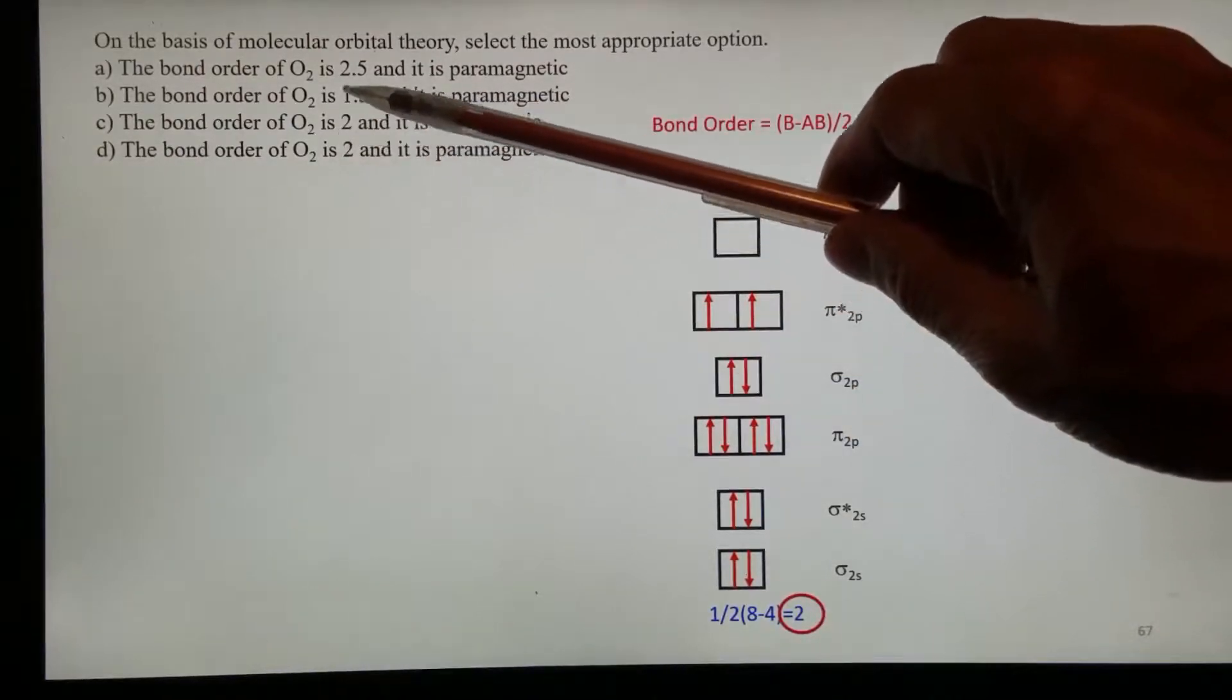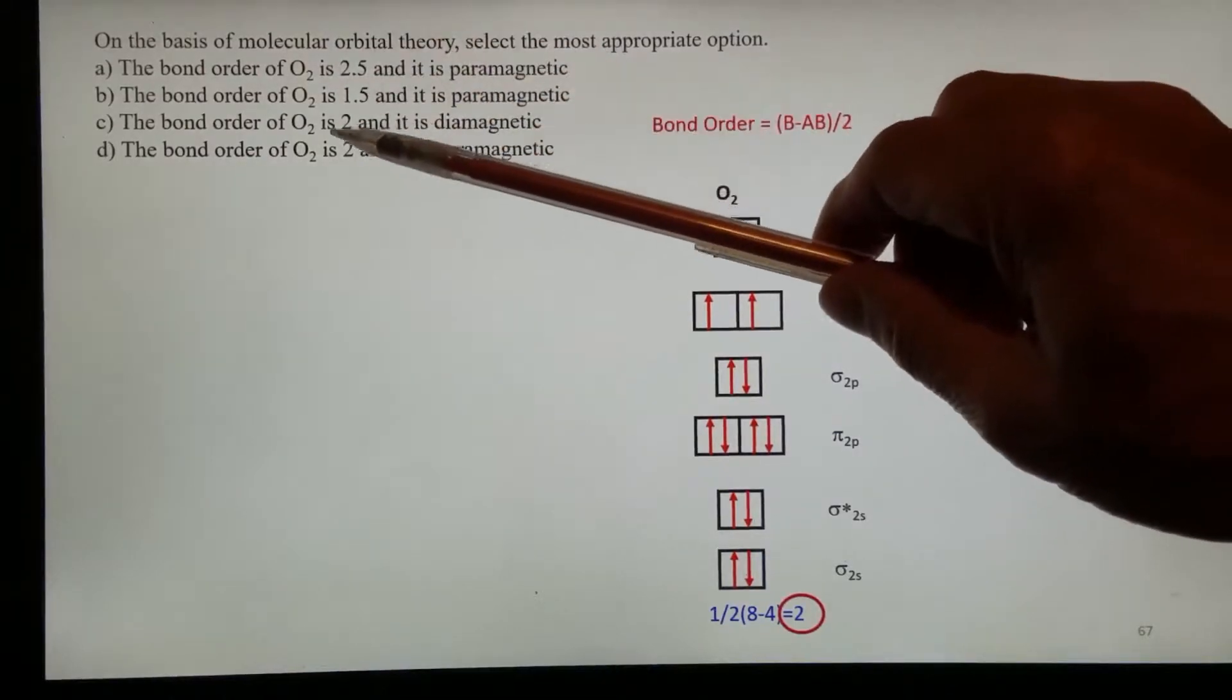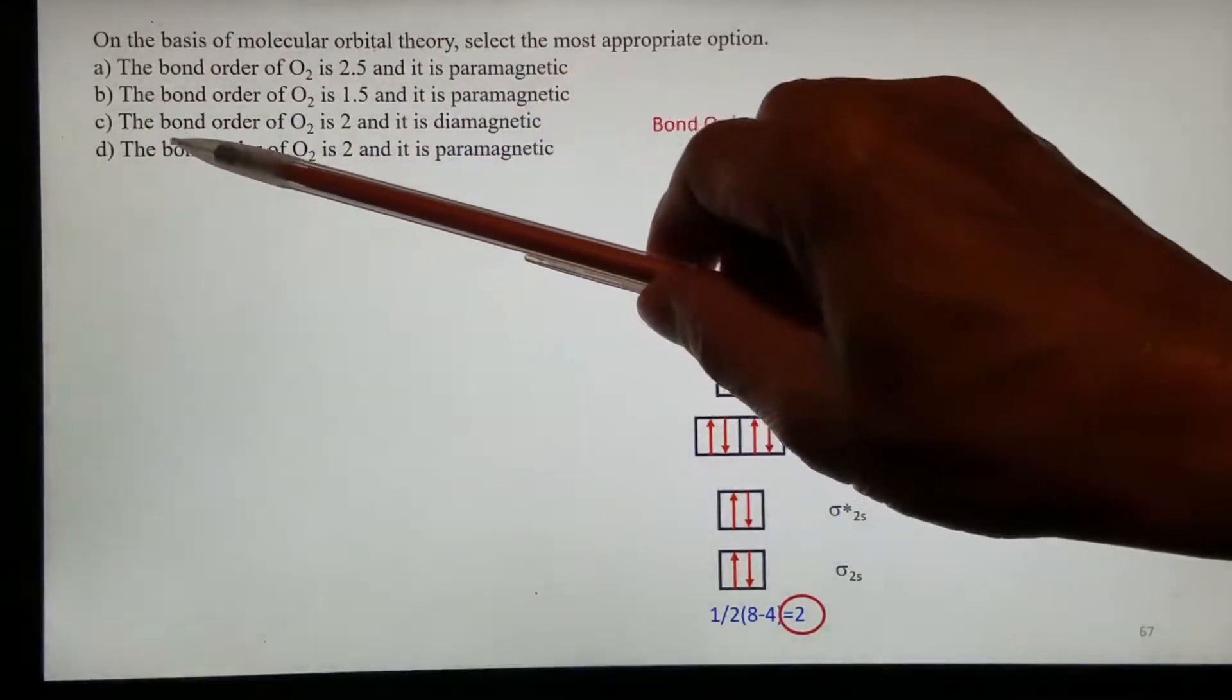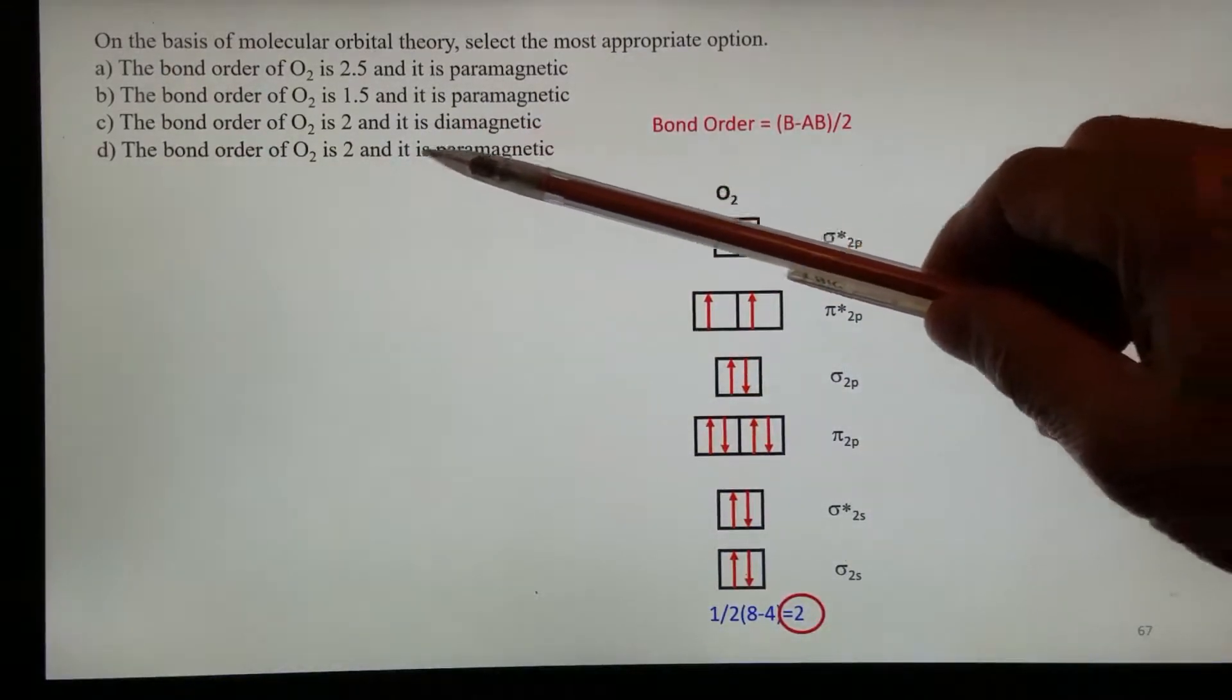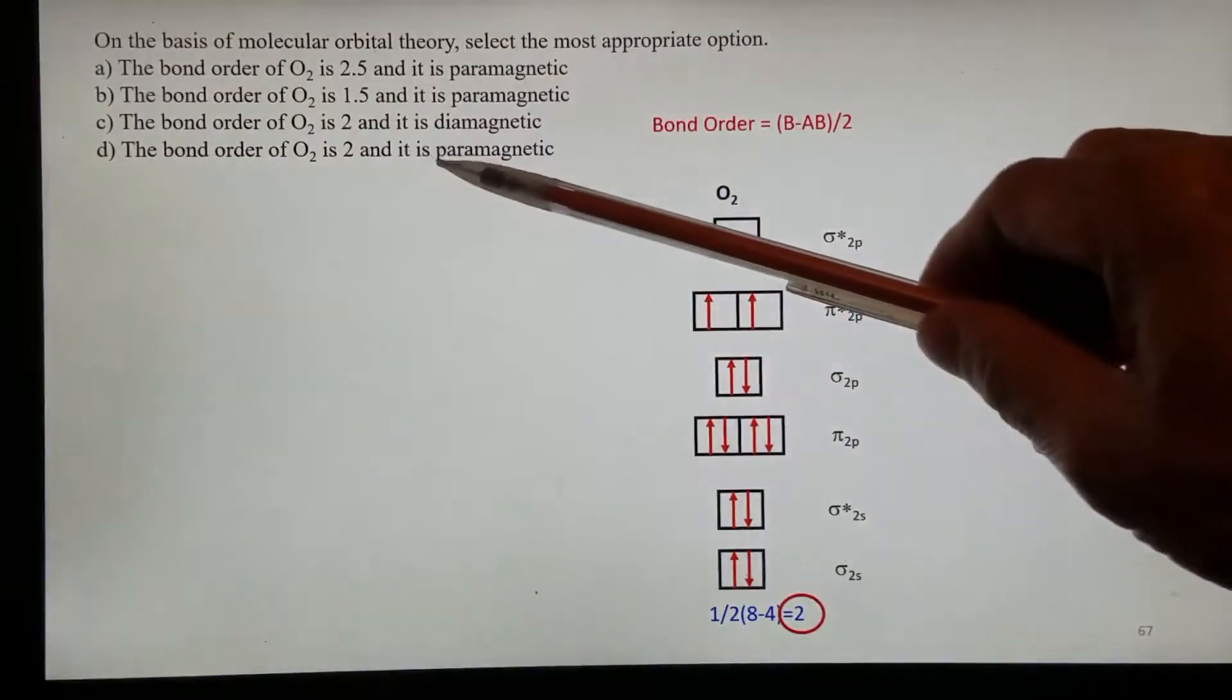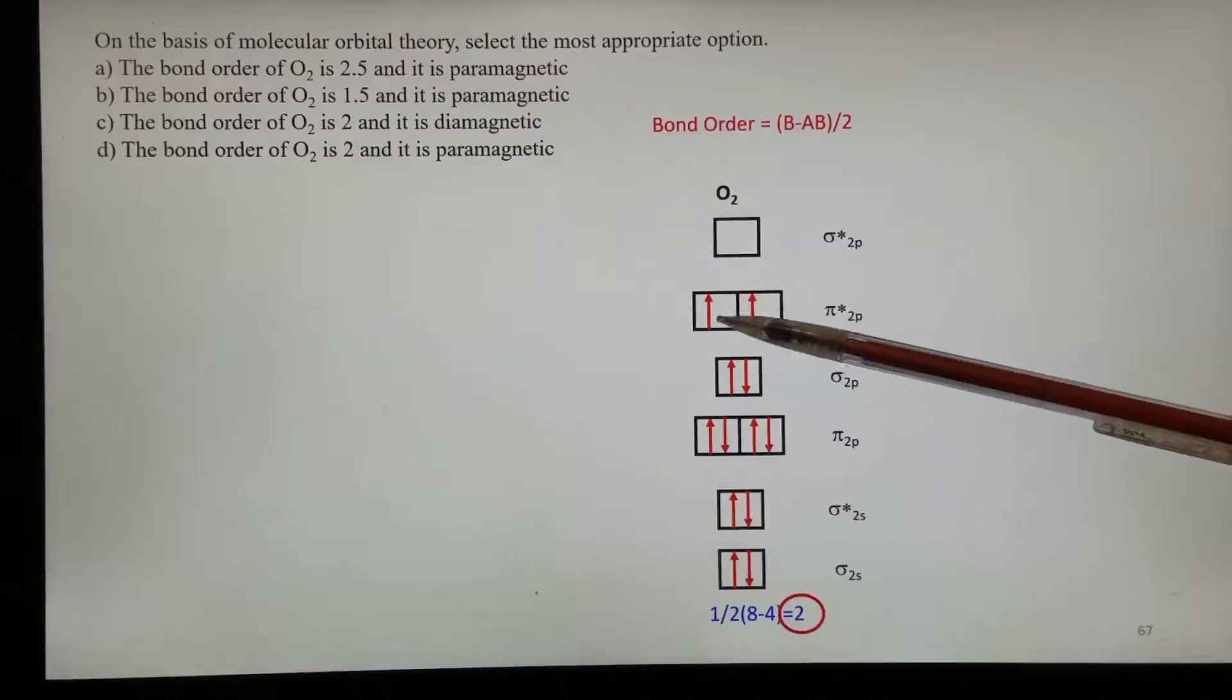Obviously A and B are out. So now it's between C and D for the correct answer. C says it's diamagnetic. D says it's paramagnetic. Let's take a look.